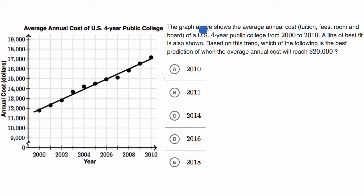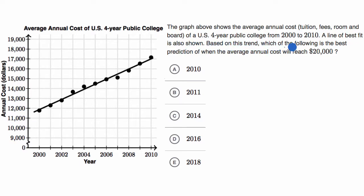We're told the graph above — I put the graph here to the left so that we can see it on the screen. The graph shows the average annual cost — tuition, fees, room and board — of a US four-year public college from 2000 to 2010. A line of best fit is also shown. Based on this trend, which of the following is the best prediction of when the average annual cost will reach $20,000?